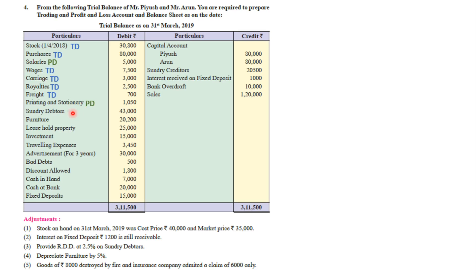Sundry debtors: balance sheet asset. Furniture: balance sheet asset. Leasehold property: balance sheet asset. Investment: balance sheet asset. Travelling expenses: profit and loss debit. Advertisement: profit and loss debit — in bracket it says 'for 3 years,' which means there is a hidden adjustment we will discuss later. Bad debts: profit and loss debit. Discount allowed: profit and loss debit. Cash in hand: balance sheet asset. Cash at bank: balance sheet asset. Fixed deposit: balance sheet asset.